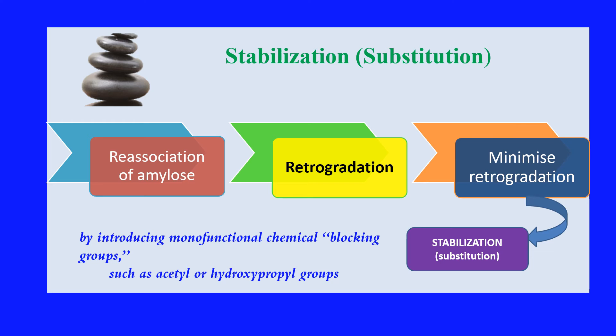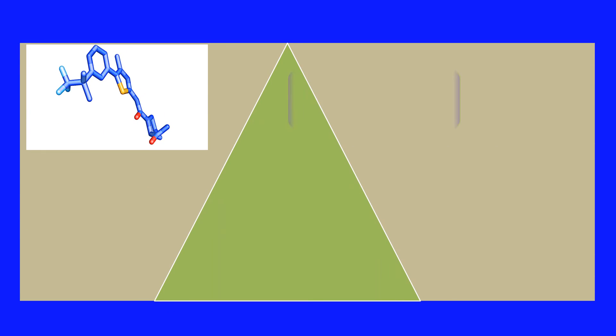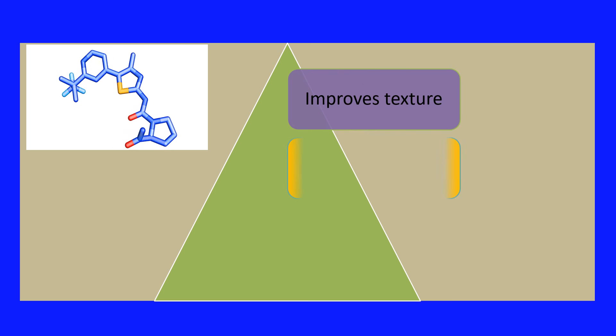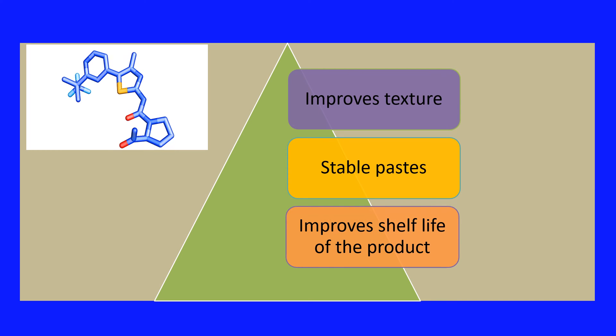The next technique is stabilization, also referred to as substitution. Here, re-association of amylose units leads to retrogradation, and the stabilization technique can minimize retrogradation by introducing monofunctional chemicals called blocking groups, such as acetyl or hydroxypropyl groups. The applications of this technique include texture improvement, production of a stable paste, and improved shelf life of the product.